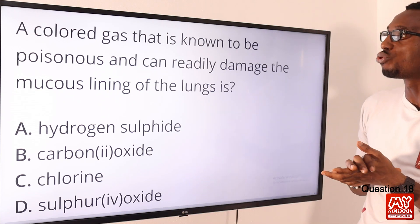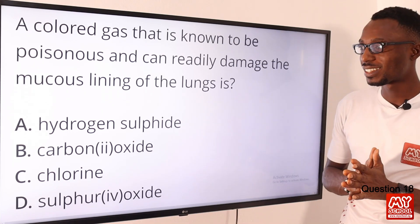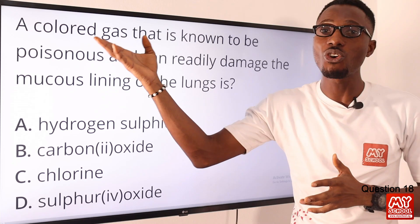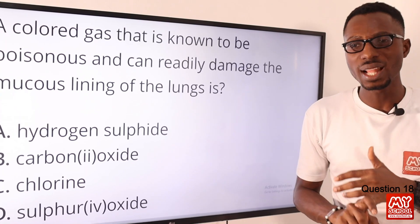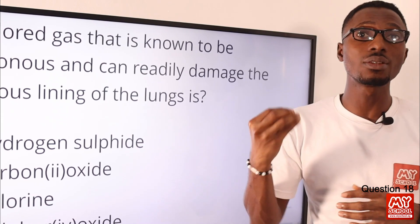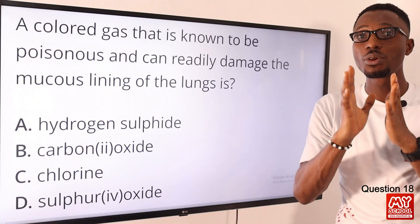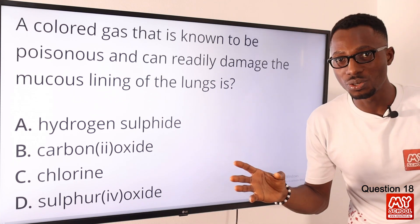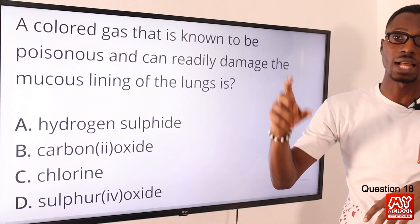Question eighteen: a colored gas that is known to be poisonous and can readily damage the mucus lining of the lungs is what? That is chlorine gas. Chlorine gas has a greenish-yellow color, an unpleasant smell, and is choking. Even small concentrations are lethal to the mucous lining of the lungs. Note the key concept: a colored gas. If the concept were a colorless odorless gas, we would go for carbon monoxide. But here we have a colored gas, so the correct option is option C for chlorine.